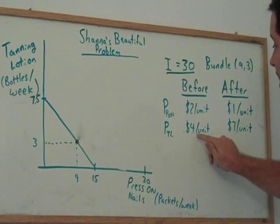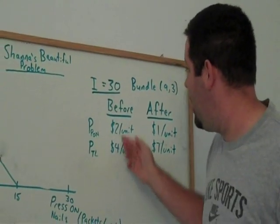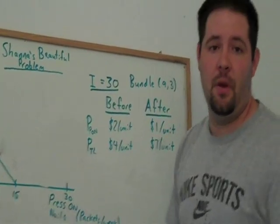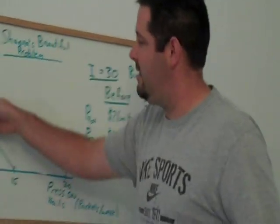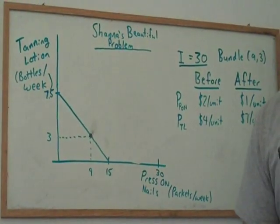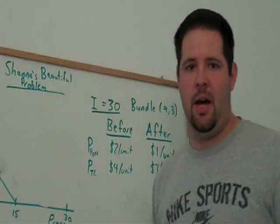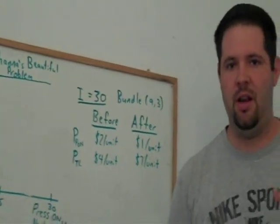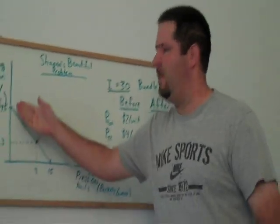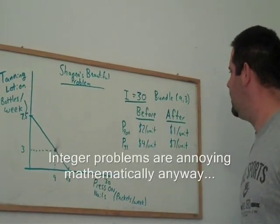You can do the same thing with tanning lotion. How many bottles of tanning lotion could Shannon buy per week if she spent all of her money on tanning lotion? It's 4 into 30, we get 7 and a half, but remember that we have a time period of a week here, so you can actually buy 7 and a half bottles of tanning lotion per week, even though bottles are indivisible. Just buy 15 every two weeks, so decimals don't really bother us too much in this setting.